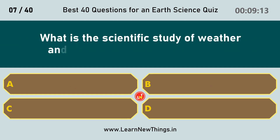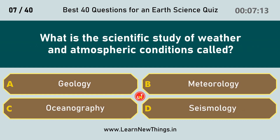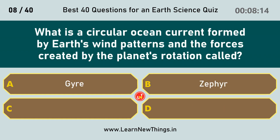What is the scientific study of weather and atmospheric conditions called? Meteorology. What is a circular ocean current formed by Earth's wind patterns and the forces created by the planet's rotation called? Gyre.